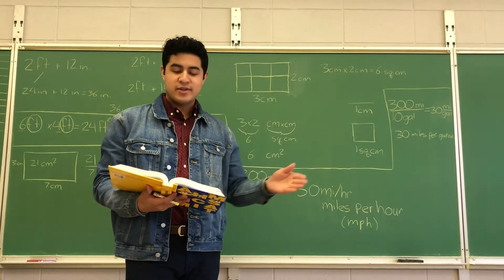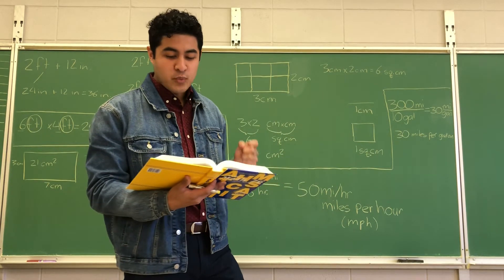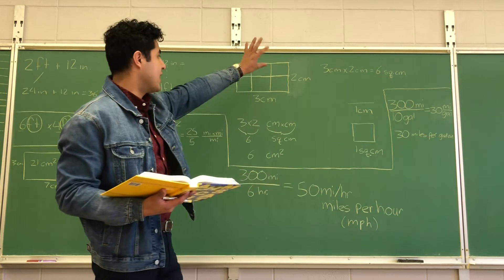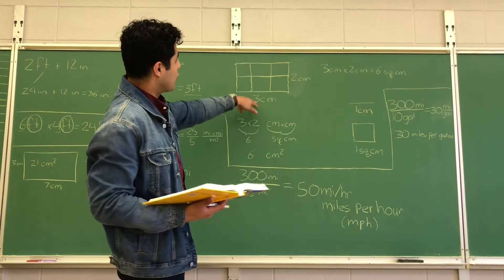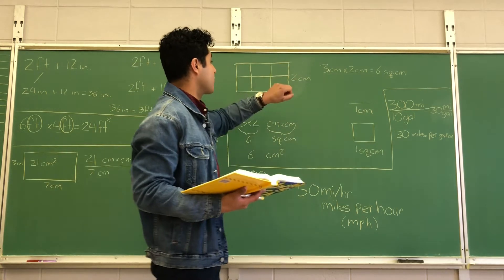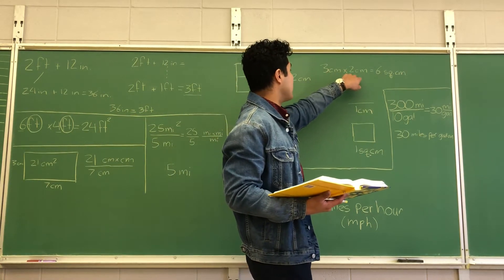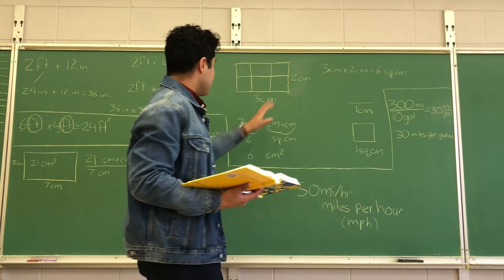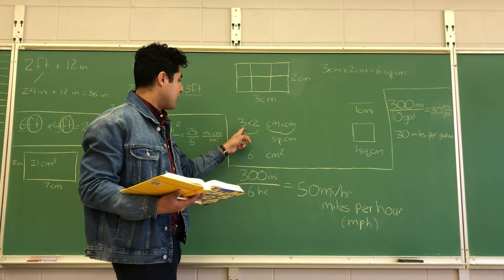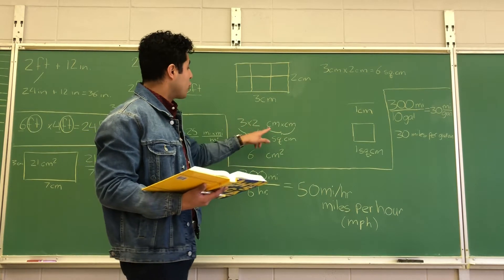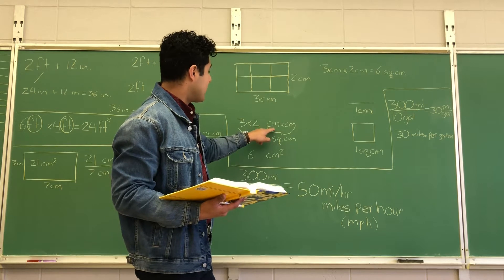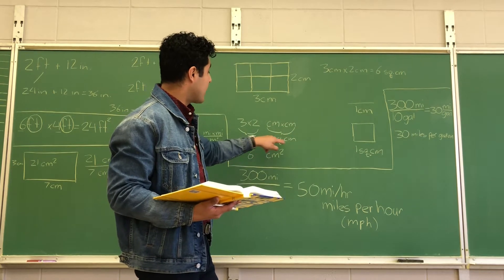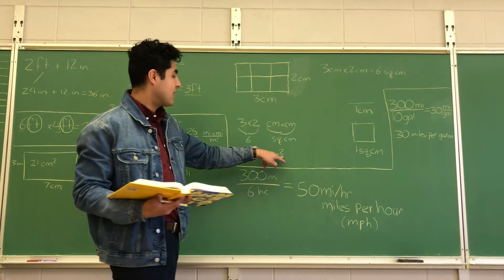When we find the area of a figure, we multiply the lengths, and notice that the units change when we multiply. Say we need to find the area of a rectangle — area equals length times width. We're given three centimeters by two centimeters. So we multiply three centimeters times two centimeters. We multiply the numbers: 3 times 2 equals 6. But we also multiply the units: centimeter times centimeter gives us centimeters squared.